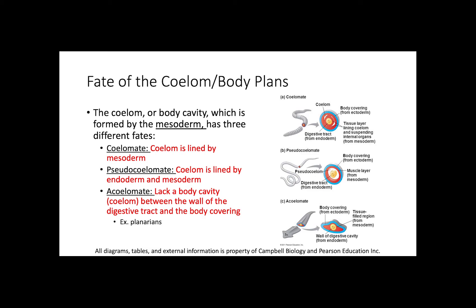We can see coelomates, in which the coelom is lined strictly by mesoderm. That would be section A in the figure on the right. If you'll notice, there's only red — which in this figure indicates mesoderm — surrounding the coelom. That would be what we consider a true coelomate.